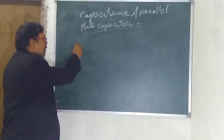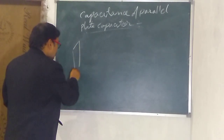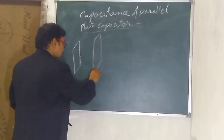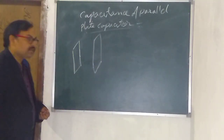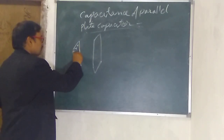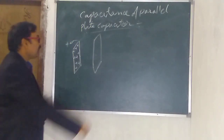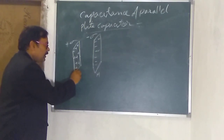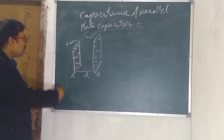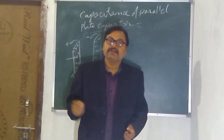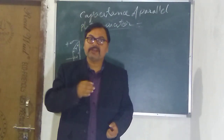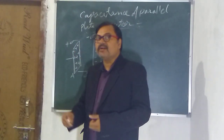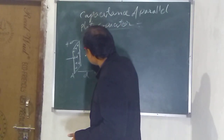I am going to draw the parallel plate capacitor. Here there are two plates. One is positively charged, having surface charge density plus sigma, and the other has a negative charge, having surface charge density minus sigma. The area of both plates is A, and the separation between the plates is D. Now, in order to find the capacitance, we need to find the potential, and for that we need to find the electric field in the region between the two plates. Let us consider a point B anywhere in between the plates.